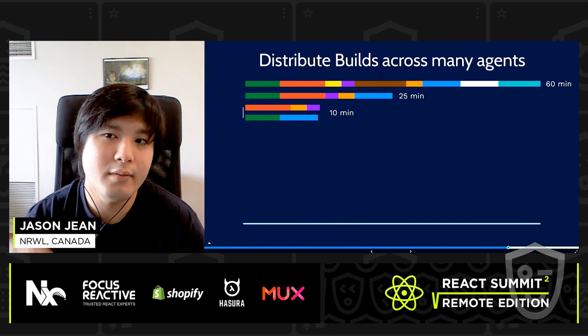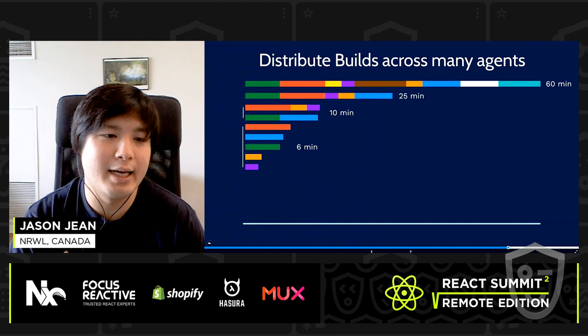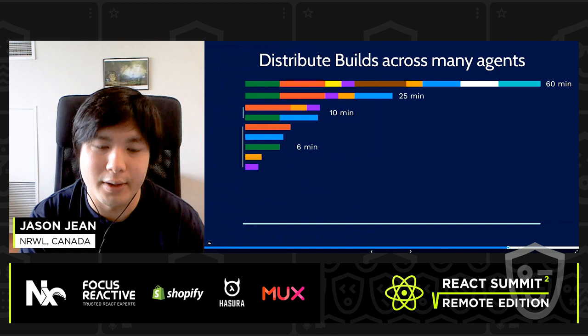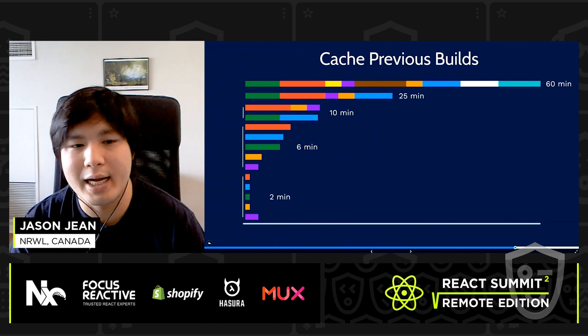You can also distribute builds across multiple agents. Not only can you parallelize on the same machine, but you can actually distribute them — with five different workers, you can test five different projects across different CI nodes. You can also cache previous builds. If a build has already been done before, NX realizes it doesn't need to run it again and pulls from cache, bringing times down to two minutes. The best way to do this is via remote cache, which you can add with NX Cloud — the paid add-on to NX.